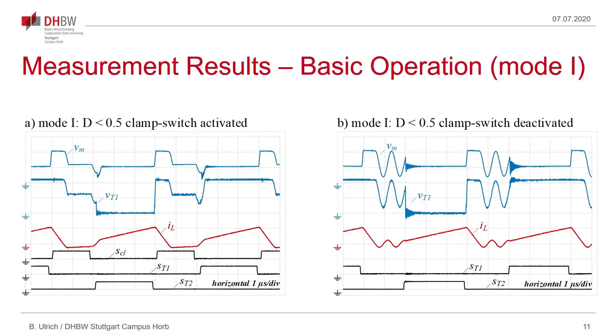Now to some measurement results. Here is shown the waveforms for the converter operating in mode one where the duty cycle is less than 50%. We can see here on the left side the waveforms for converter operating with clamp switch activated and on the right side with clamp switch deactivated. As can be seen we get the smooth waveforms on the left side when the clamp switch is activated without this parasitic oscillation. And therefore EMI is improved and we can achieve at least here a partial ZVS.